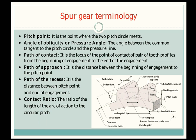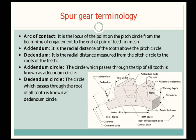Next is contact ratio. It is the ratio of the length of the arc of action to the circular pitch. Next is arc of contact. It is the locus of a point on the pitch circle from the beginning of engagement to the end of engagement of a pair of teeth in mesh — the arc traced from when the two gears begin mating to when they end their engagement.